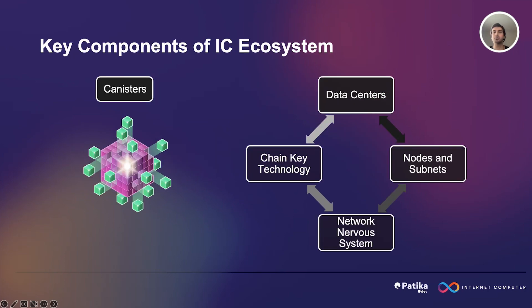Let's look at the key components of the Internet Computer ecosystem. First, we have data centers. Data centers are physical locations that host the hardware and software components of the Internet Computer Network. They are composed of servers, storage devices, routers, switches, and other equipment that provide computing power, storage capacity, and network connectivity.